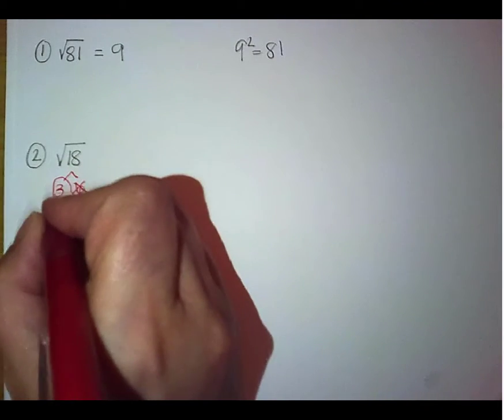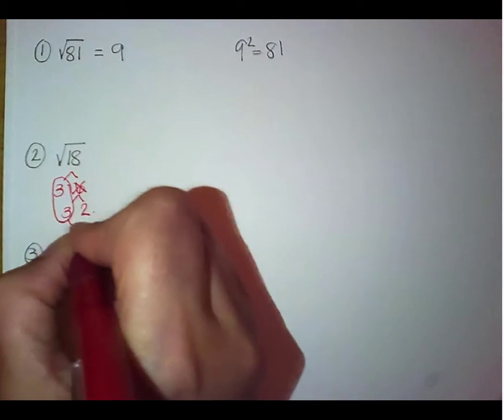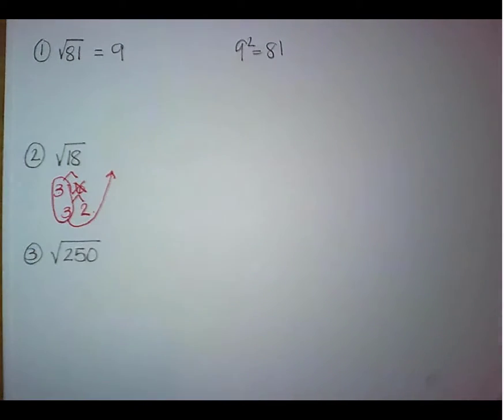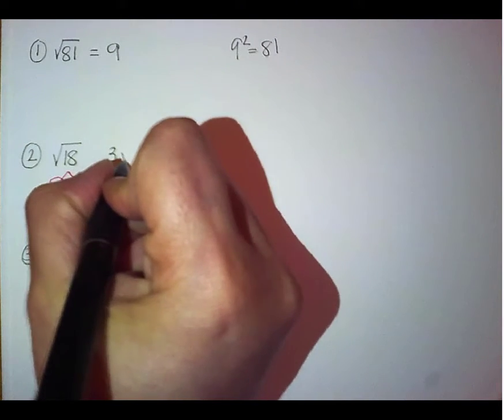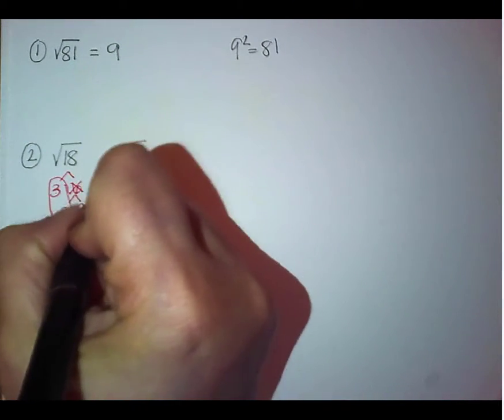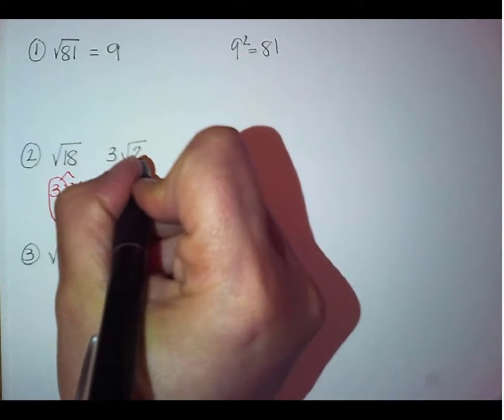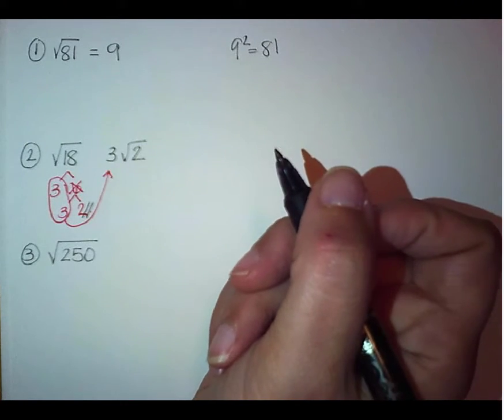So since we have a pair of 3s, remember that the 3 gets to go outside, just one of them. Square root of whatever's left underneath, in this case, a 2. So that would be 3 square roots of 2.